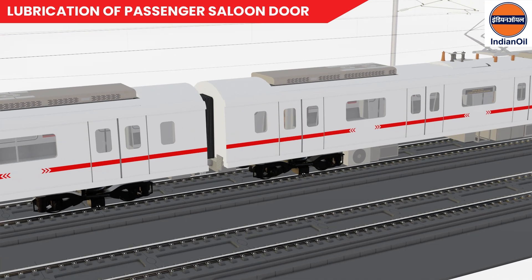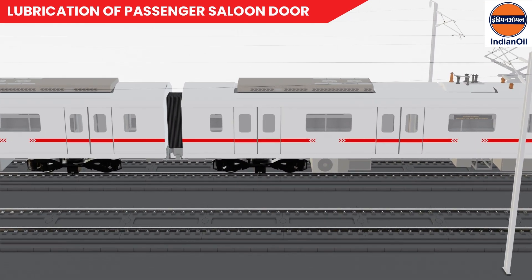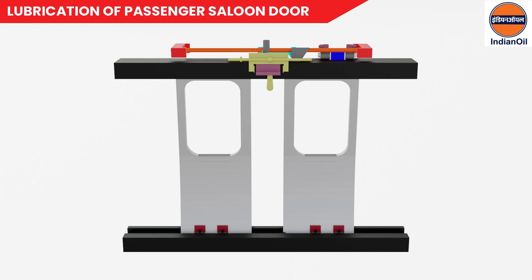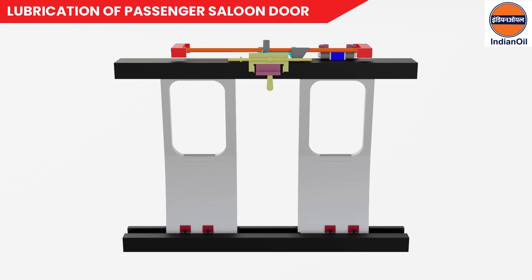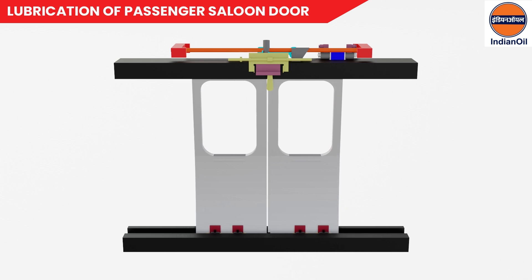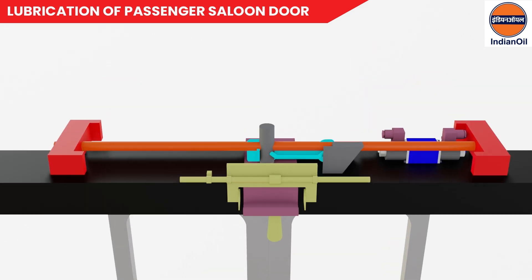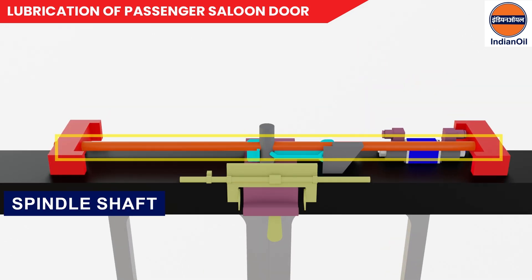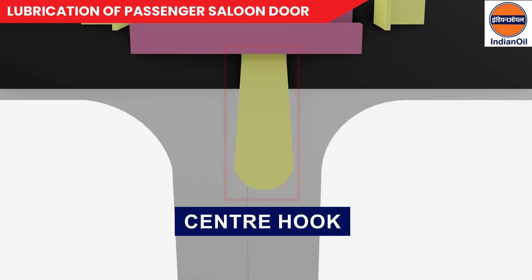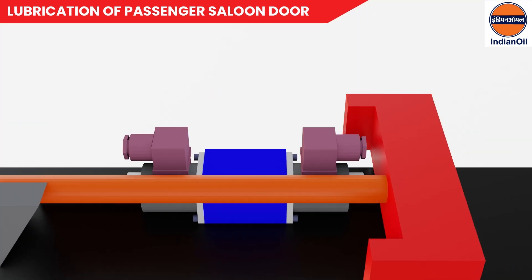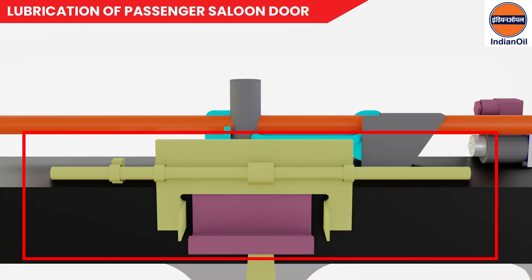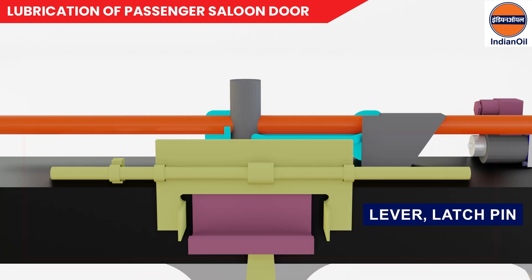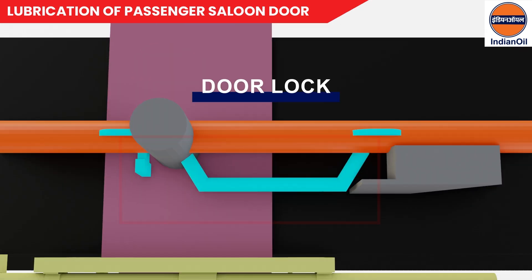Number two: passenger saloon door. The passenger saloon doors are electrical sliding doors fitted in both the driver and motor bogeys. Lubrication is applied on different door components as follows: grease used on saloon door spindle shaft, on saloon door center hook, on solenoid of saloon door hanging device, on lever latch pin in saloon door door lock, and coupler grease.